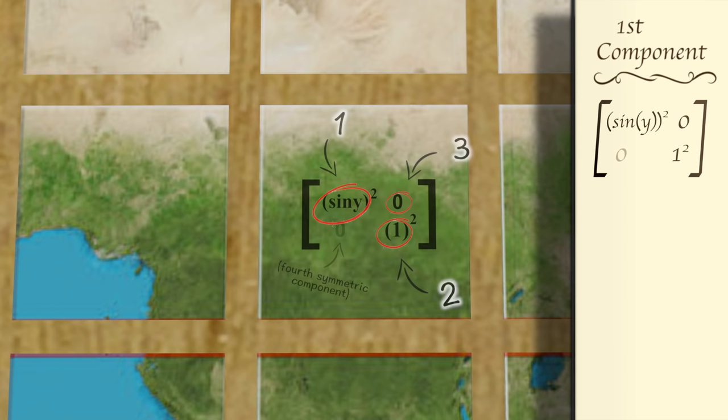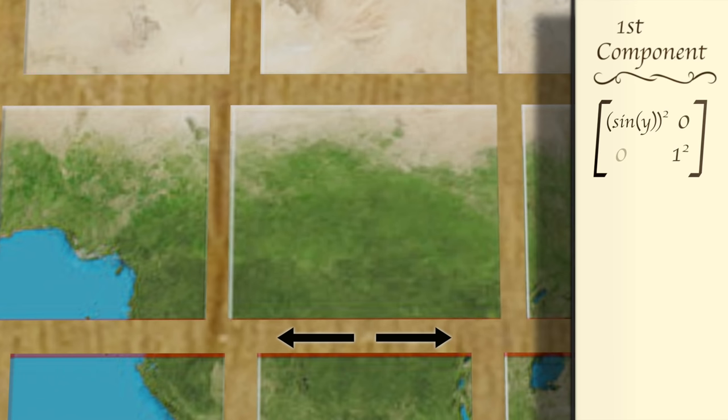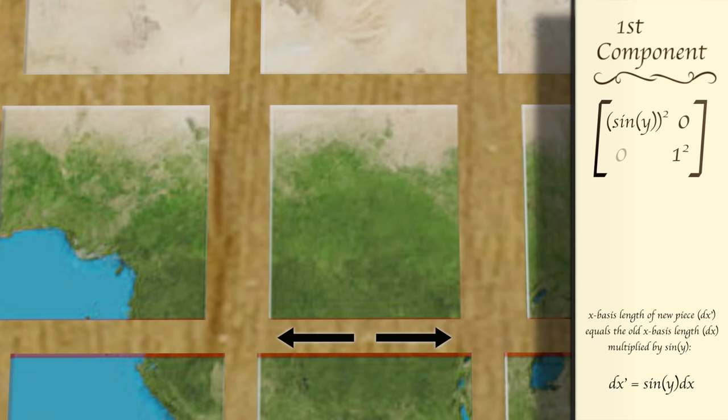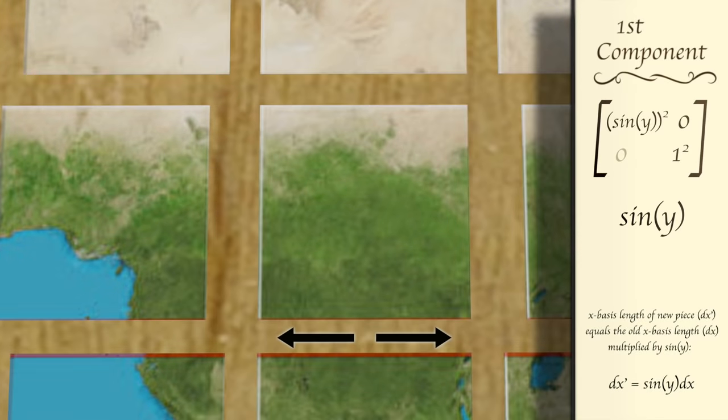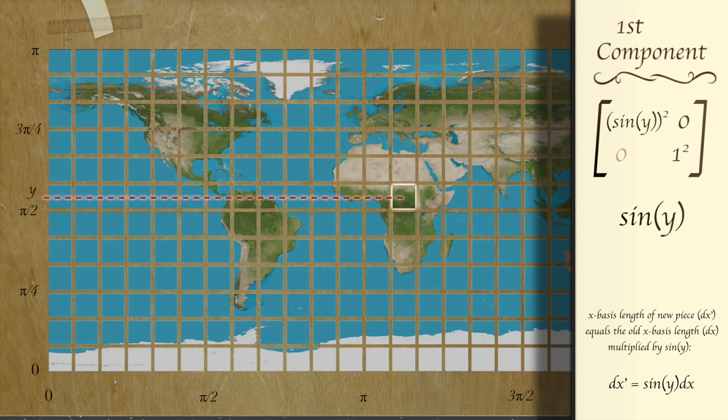The first component tells us, by what amount to stretch or shrink the x length of the piece. The value of this component is the sine of the value corresponding to the y coordinate of that piece.